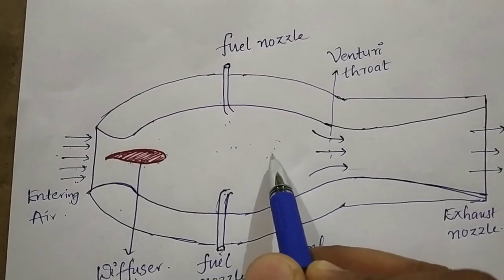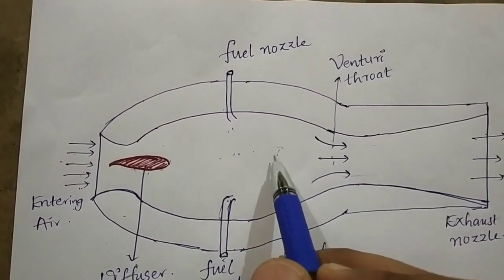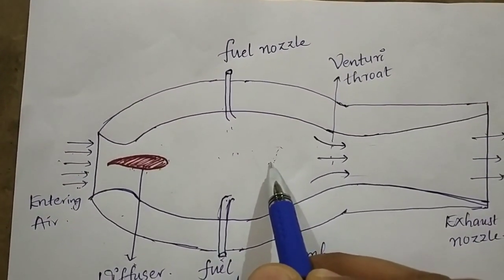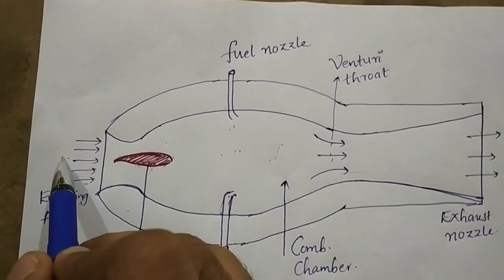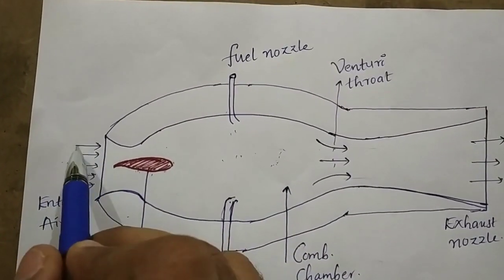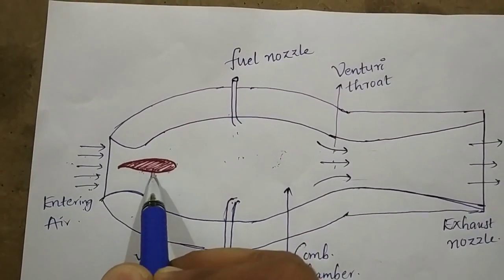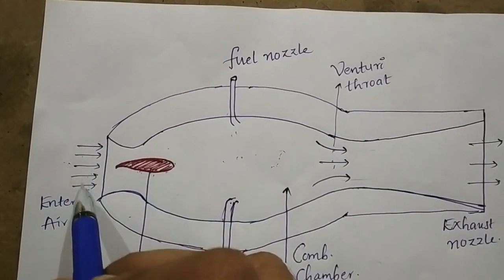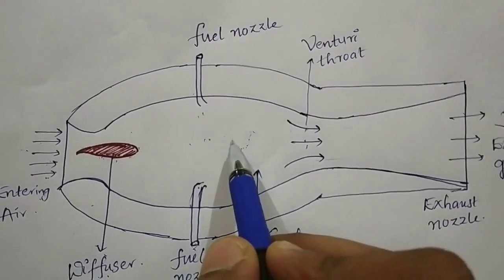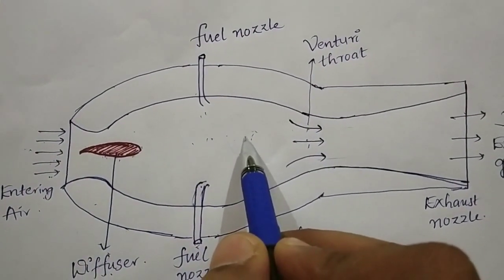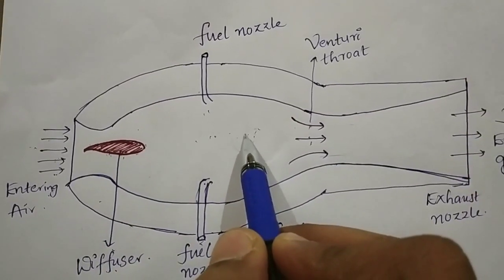If the pressure is more in the combustion chamber, then the grid walls will be closed. Therefore, there is no air entering into the diffuser through the grid walls, and the combustion chamber pressure remains higher.